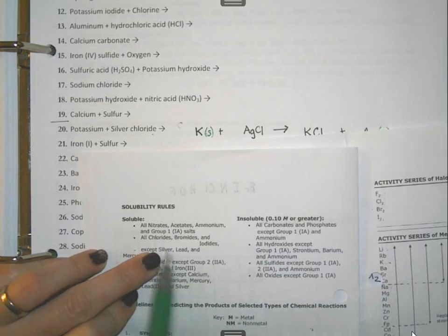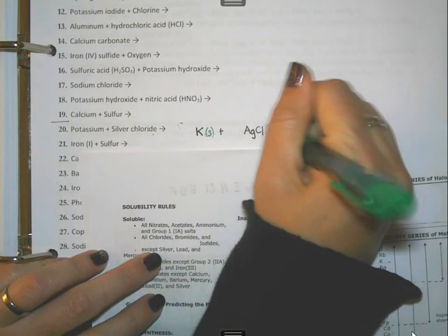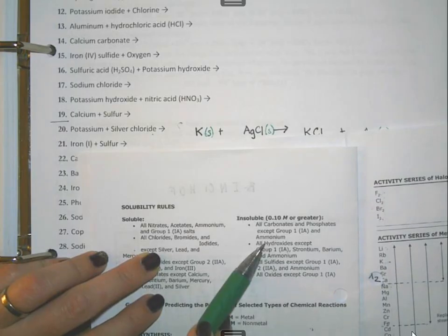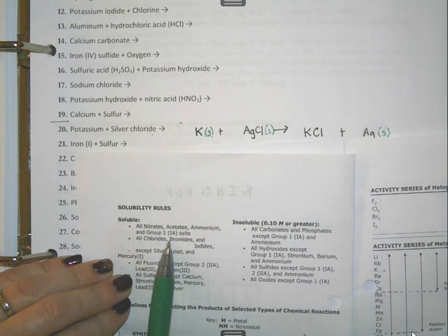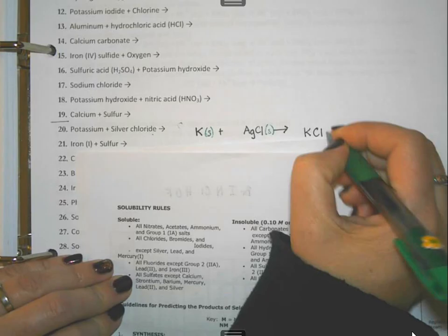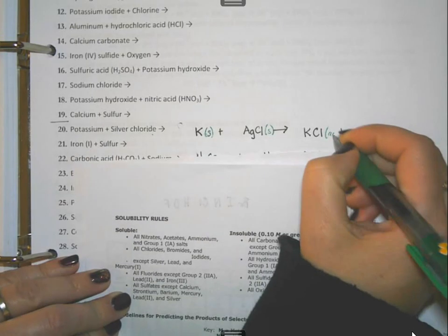Well, chlorides are soluble unless they're with silver, which is going to make them be insoluble. That means silver, the silver chloride is going to be a solid. If it's insoluble, it will be a solid in water. The potassium chloride, chlorides are soluble unless they're with one of these, and potassium is not an exception over here. So that means that this will be aqueous.